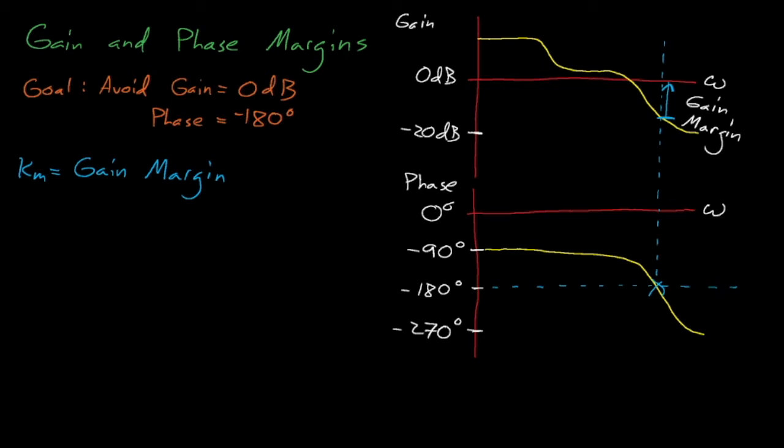Multiplying our system's power, or the signal, by a constant that is greater than 1 will uniformly raise all values in this gain plot. Conversely, multiplying our signal by a constant that is less than 1 will uniformly lower this gain plot. A system with a gain margin that's greater than 1 implies that we need to raise the power by a factor of km to make our system unstable.